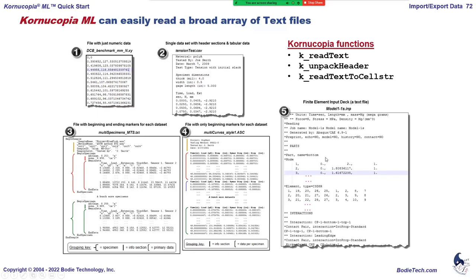If you have files like an Abacus input deck — or LS-Dyna or Ansys input files — you can read those in with the k-read text to cell string function. This will read any text file, including MATLAB M-file scripts, and bring it in as a cell string which you can further manipulate inside MATLAB. Chronucopia has special functions to help with that manipulation, and you can also use native MATLAB functions.